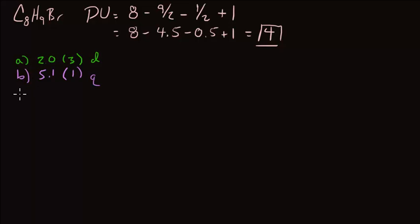The third and final piece of spectral data is going to show up at around 7.4 ppm. It integrates to 5 and it shows up as a broad singlet.